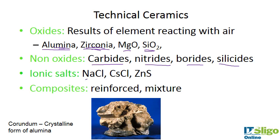Ionic salts include sodium chloride (table salt), cesium chloride, and zinc sulfite, and these have significant uses in industry. There can also be composites, which might be a polymer reinforced with ceramic, or a mixture of materials.